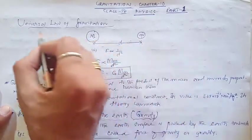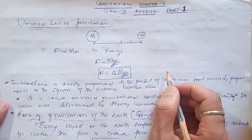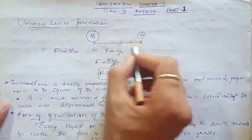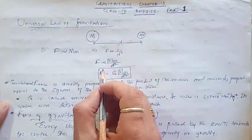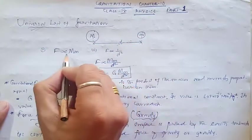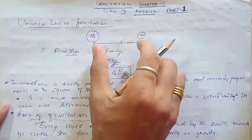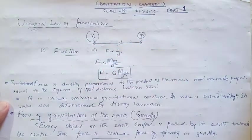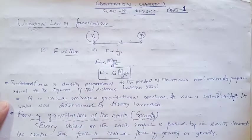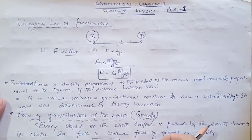Newton's Universal Law of Gravitation states that the gravitational force of attraction between these two bodies is directly proportional to the product of their masses. More is the mass of the two bodies, more is the gravitational attraction between them. Smaller the mass of the two bodies, smaller is the attraction.